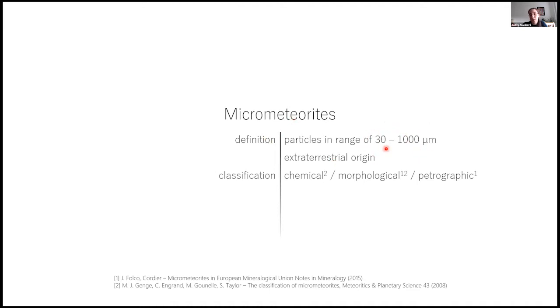But the IMO definition is that there are particles in the range of 30 micrometers to one millimeter of extraterrestrial origin. There are several attempts on the classification of these particles, either based on morphological and chemical or morphological and petrographic properties.